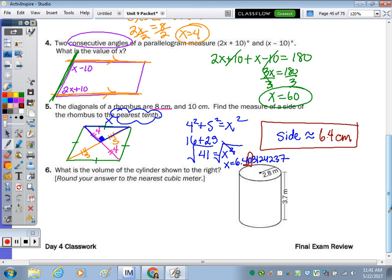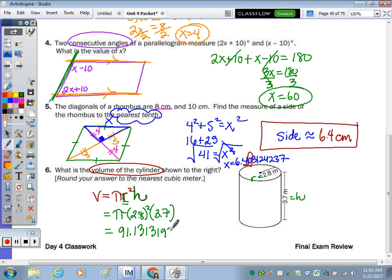Number 6, what is the volume of the cylinder shown to the right? The volume formula is πr²h. The radius is 2.8 meters and the height is 3.7 meters. Substituting: π times 2.8² times 3.7 equals 91.13 cubic meters. To the nearest cubic meter, that's 91 cubic meters.